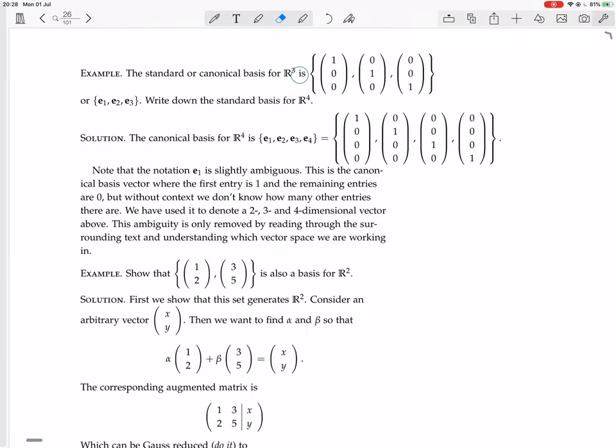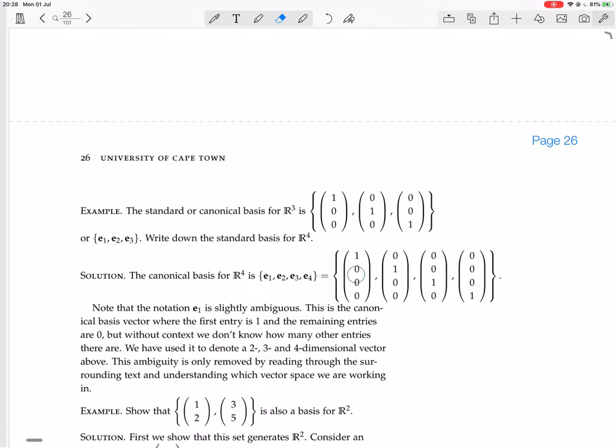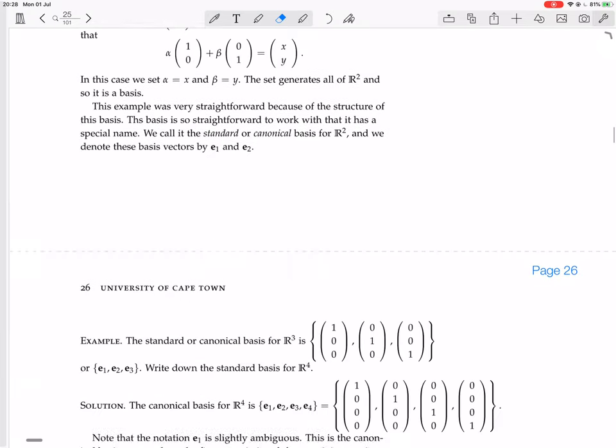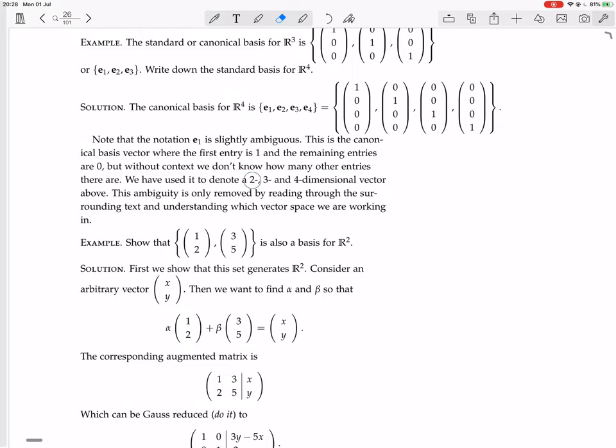Example: The standard or canonical basis for R³ is {(1,0,0), (0,1,0), (0,0,1)}, also called E₁, E₂, E₃. Now write down the standard basis for R⁴. Of course, it'll be {E₁, E₂, E₃, E₄}, which equals {(1,0,0,0), (0,1,0,0), (0,0,1,0), (0,0,0,1)}. Eᵢ has 1 in the i-th row and zeros elsewhere. Note that the notation E₁ is slightly ambiguous. This is the canonical basis vector where the first entry is 1 and the remaining entries are 0, but without context we don't know how many other entries there are. We have used this to denote 2-, 3-, and 4-dimensional vectors above. This ambiguity is only removed by reading through the surrounding text and understanding which vector space we're working in.